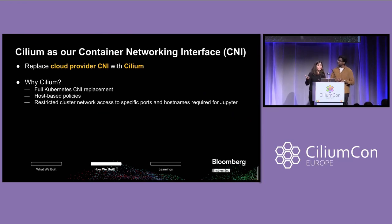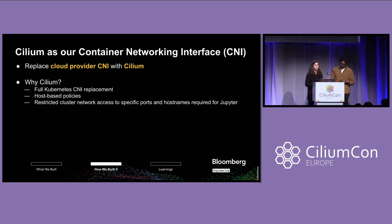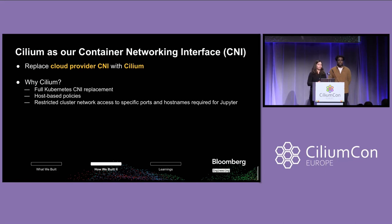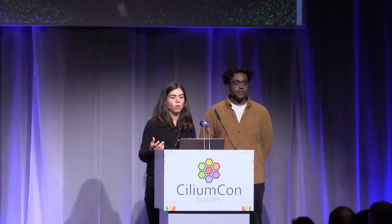We use Cilium as our container networking interface, as some of the other folks who have spoken today do as well. BQuant runs in the public cloud, and we're able to replace the cloud provider CNI with Cilium. That's one of the reasons why we chose Cilium — it is a full CNI replacement. We want to kind of control the access out of BQuant workloads because running in the public cloud, we don't want access to the full internet from those workloads because that provides some level of risk for our clients. So we wanted host-based policies to be able to control what our clients are able to access, and we were able to use Cilium to do this.